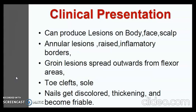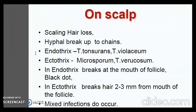Lesions can appear on the body, face, scalp with annular lesions and raised inflammatory borders. Groin lesions spread outwards from flexor areas. Nails get discolored, thickened and become friable. If infection is on the scalp, there is hair loss and hyphal break-up into chains. In endothrix infection, the hair breaks at the mouth of the follicle producing a black dot, caused by Trichophyton tonsurans and Trichophyton violaceum. In ectothrix infection, the hair breaks 2–3 mm from the mouth of the follicle, caused by Microsporum and Trichophyton verrucosum. Mixed infections also occur.